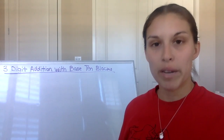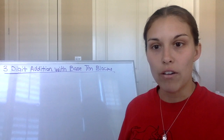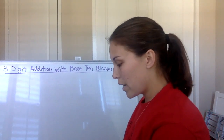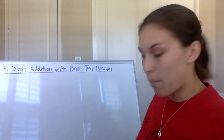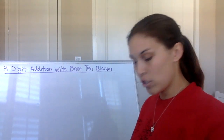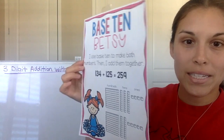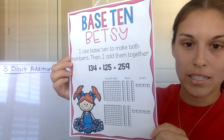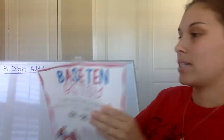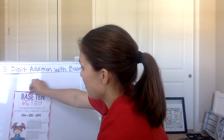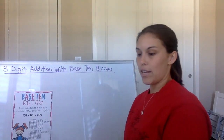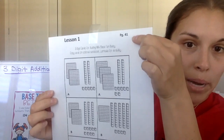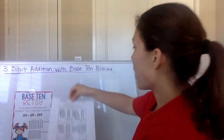In order for you to be prepared for this lesson, you're going to need a few things. So before we begin, I'm going to show you what you need. You will need two pages from the packet. The first page is the base ten Betsy poster — that's the skill we're going to be using today. You also need this page from the packet — it says lesson one, page 41 at the top.